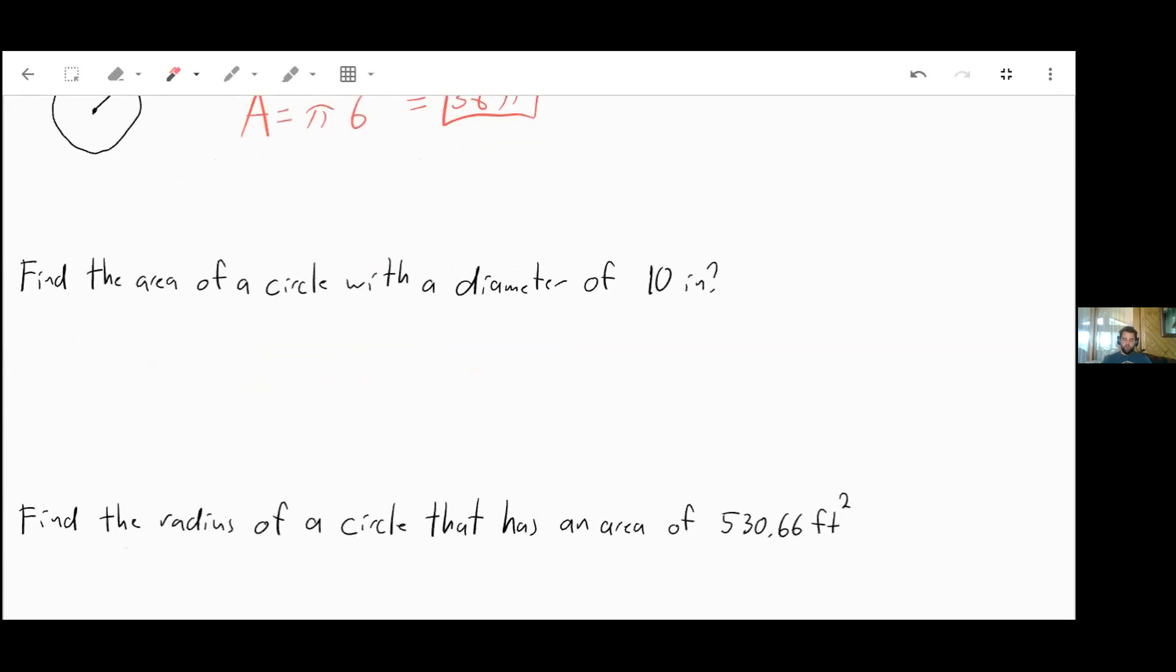So let's find the area of a circle with a diameter of 10 inches. Well, if you remember, a diameter is twice the radius. So 10 inches is actually two radii put together. So one radius is going to equal five inches, which means our area is equal to pi times our radius squared. Five squared is 25. So our answer would be 25π.